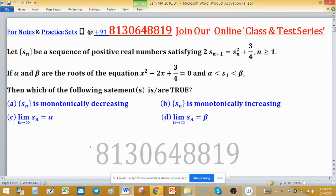The beauty of this question is as x square minus 2x plus 3 by 4 equal to 0 and the sequence is 2 SN plus 1 equal to SN square plus 3 by 4, this sequence is somehow obtained by adding the terms of this equation.